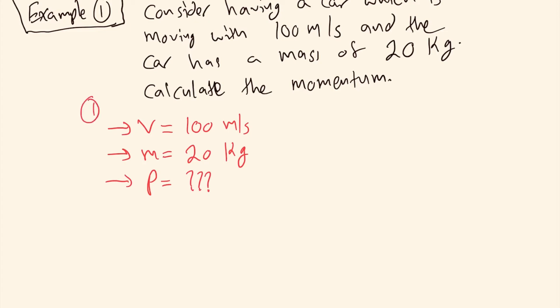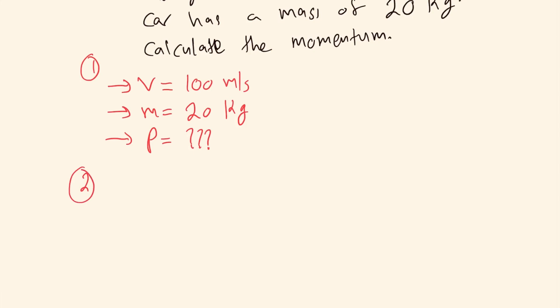Now the second step would be to connect the knowns that you have in order to solve for the unknown, and is there a way to do this connection? Yes, we have a formula for that, where momentum equals to the mass multiplied by the velocity. Momentum of the car equals to the mass of the car which is going to be 20 kilograms in this case, multiplied by the velocity of the car which is 100 meters per second. 20 multiplied by 100 equals to 2000 kilograms meter per second. This is basically the momentum of the car.